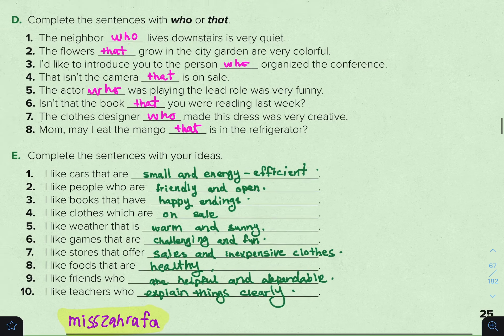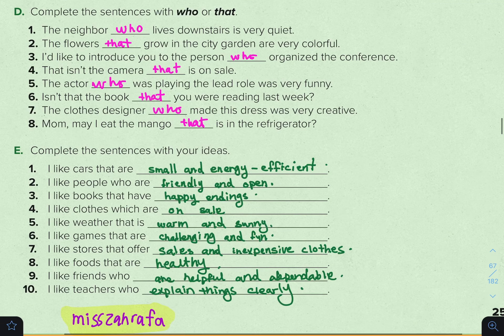Now letter E: complete the sentences with your own ideas. For example: 'I like cars that are small and energy efficient.' 'I like people who are friendly and open.' You can complete the rest on your own.